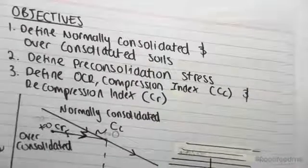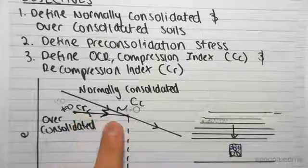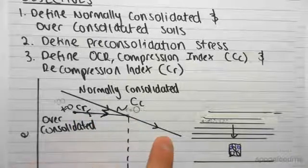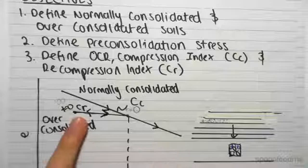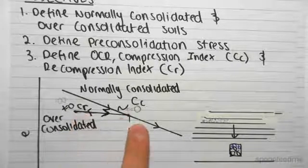So if we come back to our diagram in the first video, what we're going to be doing is we're going to be going along this line here, we're going to get to our pre-consolidated stress, and then we're going to go along this line here. So we're combining both the over-consolidated and the normally consolidated, so this line and this line.